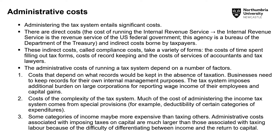Another aspect of a tax system is that it entails costs — both direct and indirect costs associated with collecting taxes. For example, you have to set up a tax office and pay its employees. Indirect costs include compliance costs such as the time spent filling out tax forms — time is money. There is also the cost of record keeping and the cost of accountants and tax lawyers. The administrative costs of running a tax system depend on a number of factors. Companies need to file their taxes, and the filing process imposes additional burden on large corporations for reporting wage income of employees and capital gains. There are also costs associated with the complexity of the tax system.